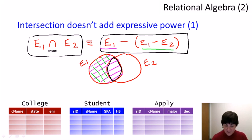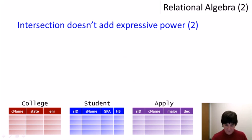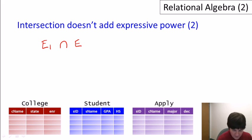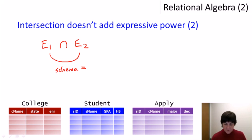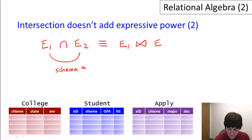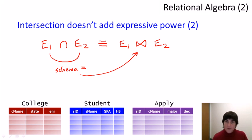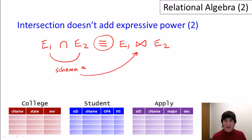A completely different way to see that intersection doesn't add expressive power: E1 intersect E2 is exactly the same as E1 natural join E2, when the schema is the same between the two. Natural join matches all columns that are equal and eliminates duplicate column values, so this is indeed an equivalence — a second reason that intersection doesn't add any expressive power.